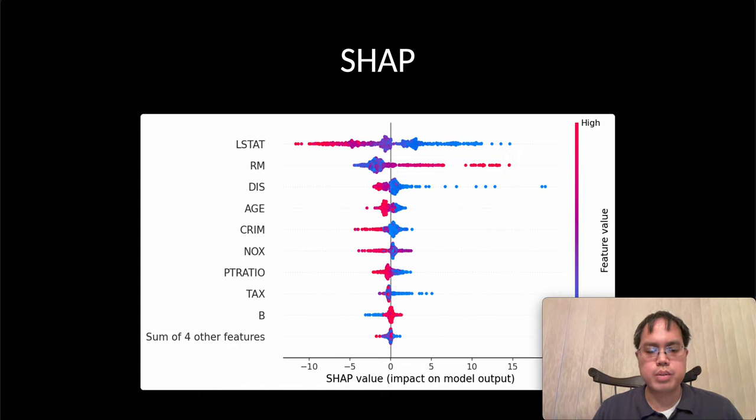We can use SHAP or Shapley Additive Explanations, which is software based on game theory. We can generate a summary plot such as this and see how much contribution a feature is making to the prediction.